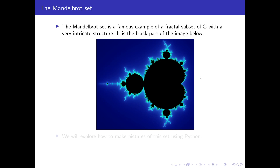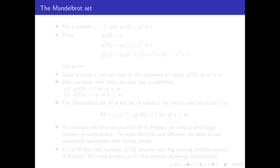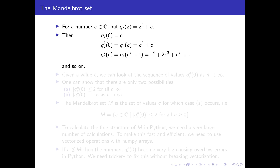So let's explain exactly what this set is. We start with a complex number C, and using that we define the quadratic polynomial QC(z) = z² + C. We start with 0, apply QC to get C, then apply QC again to get C² + C, then again to get C⁴ + 2C³ + C² + C, and so on. You don't need the formula as a polynomial — you just take your number, square it, add C, square and add C again repeatedly.